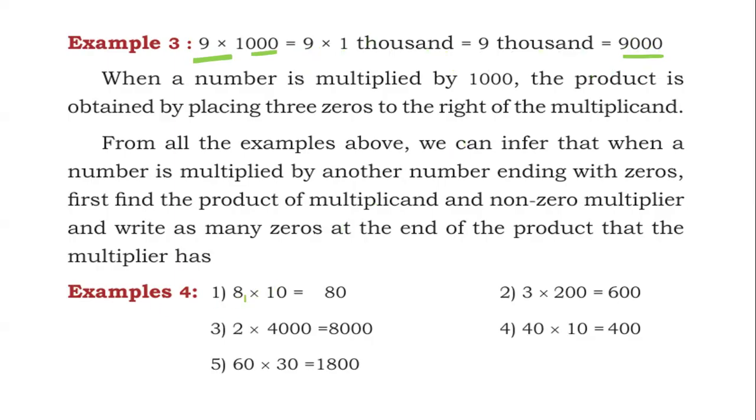Examples: 8 into 10 equals 80. 2 into 4000. First multiply these numbers. 2 into 4 is 8. Put right hand side zeros. This is 8,000.